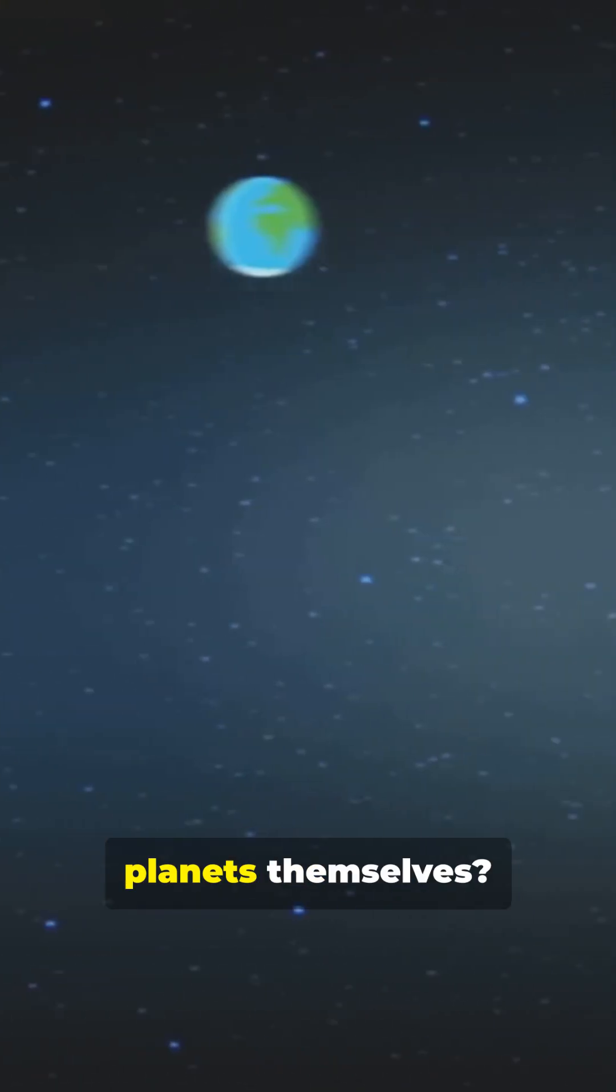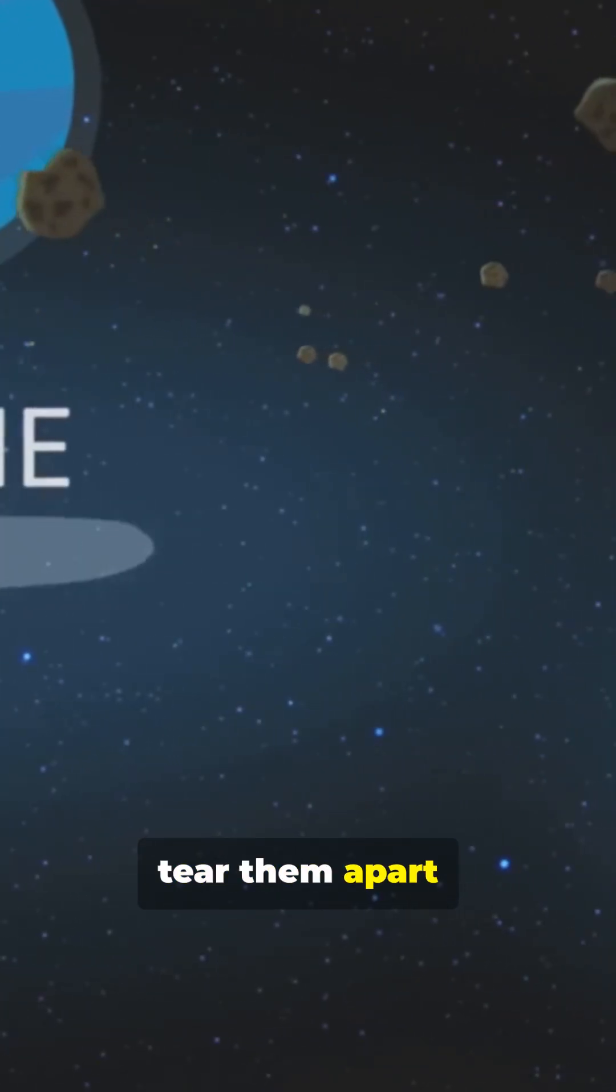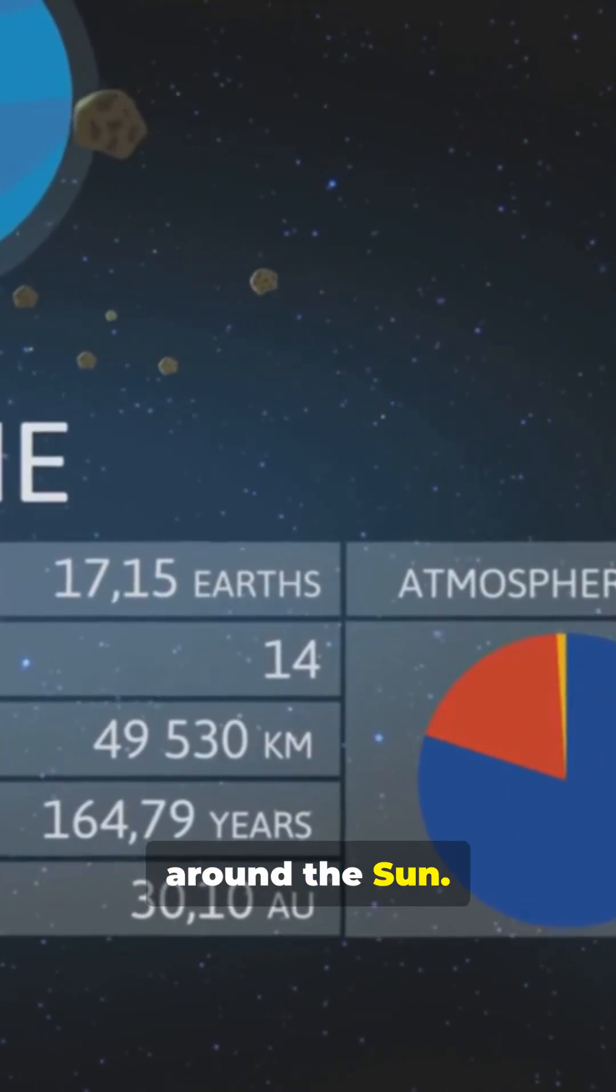And the TRAPPIST-1 planets themselves? Tidal forces could heat them, tear them apart, or push them into brand new orbits around the Sun.